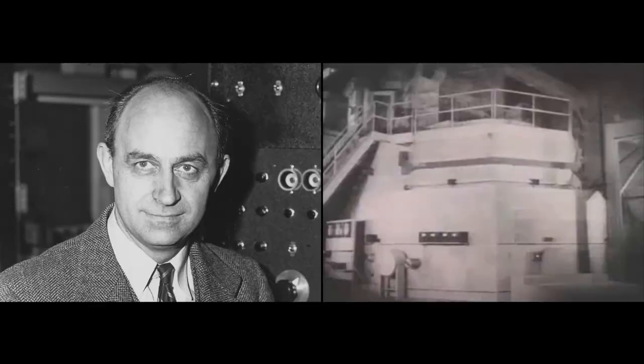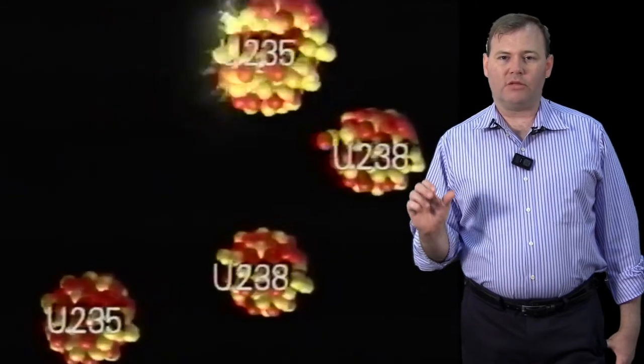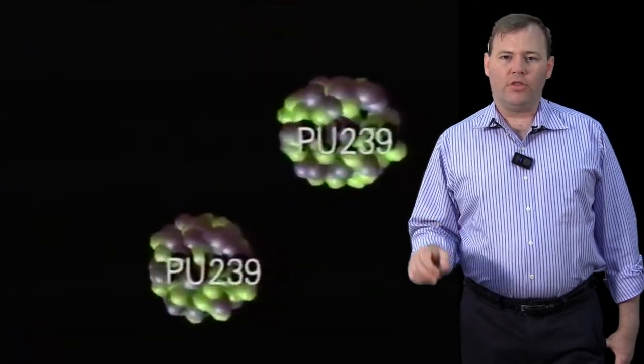Enrico Fermi and Eugene Wigner saw the future quite a bit differently. Fermi believed we should focus our efforts on the fast breeder reactor. It could have a substantial breeding gain - in other words, it could make more fissile material than it was consuming.